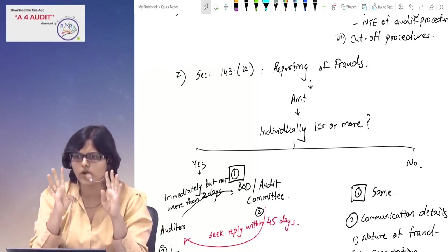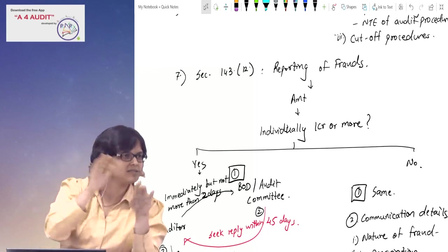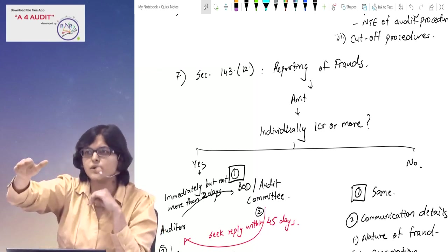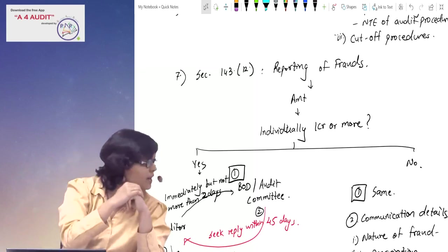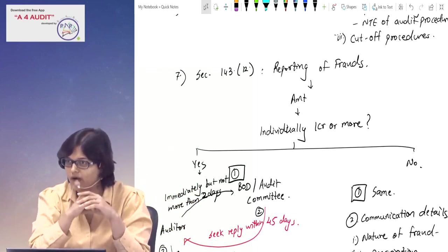Communication will be given in ADT-4 form to the Secretary of Ministry of Corporate Affairs. That will be in a sealed cover, sent by registered AD or speed post, followed by confirmation by email. That will be on the letterhead of the auditor with stamp, sign, and membership number.